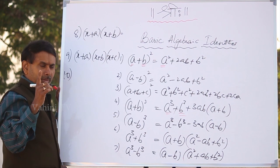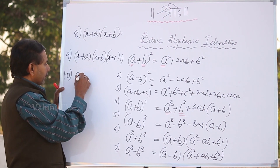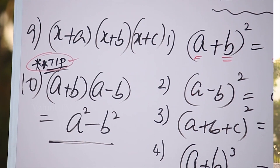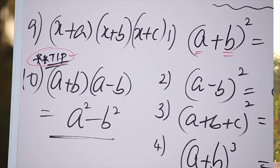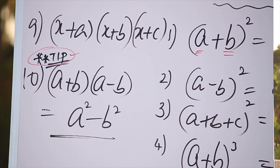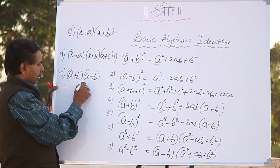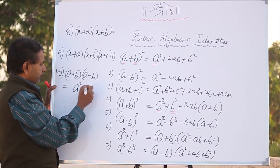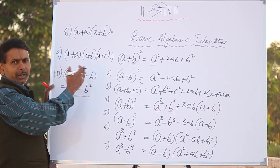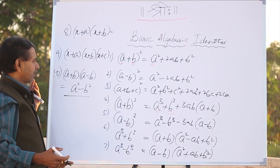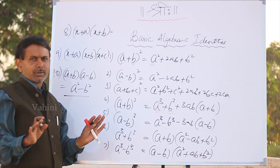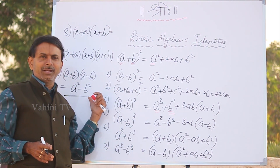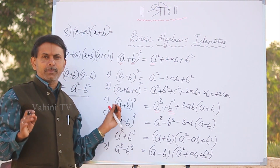Last but not least — formula number 10: a plus b into a minus b. This is a very important formula. The answer is a squared minus b squared, by opening the brackets and simplification. This is a fundamental, basic formula.